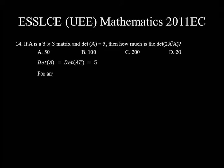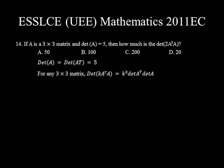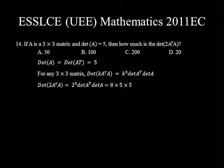The second formula: for any 3x3 matrix, the determinant of a constant K times A transpose times A is equal to K to the power of the order (that's 3) times the determinant of A transpose times the determinant of A. So the determinant of 2 times A transpose times A equals 2³ times det(A transpose) times det(A), which is 8 × 5 × 5 = 200. So choice C is the correct answer.